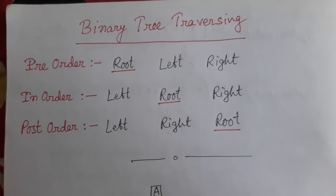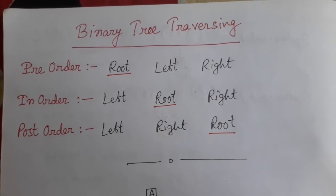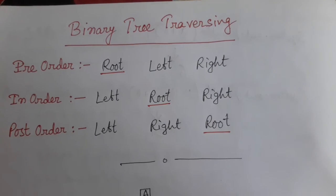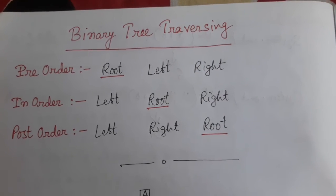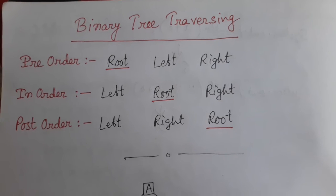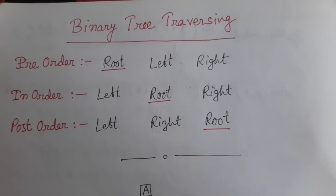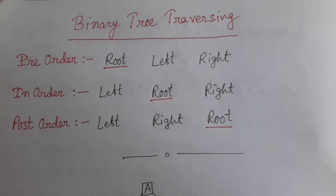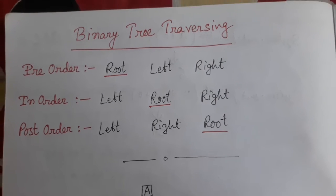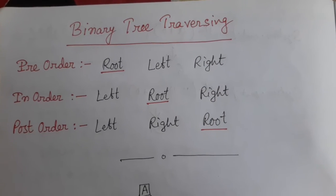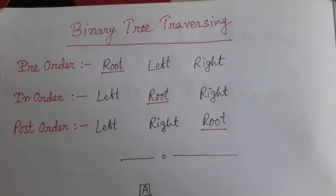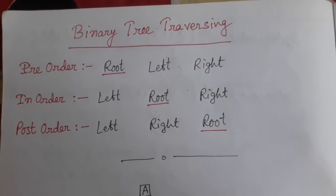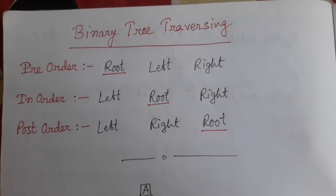As you can see here, we are having three different formulas to find out the traversing rules. For pre-order, we have root, left, right — so first we take out the root, then left, then right. For in-order, it is left, then root, then right — root comes at the middle position. And for post-order, it is left, right, root.